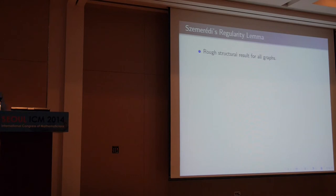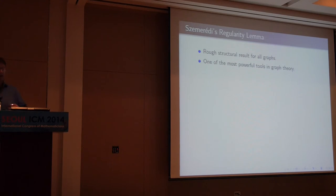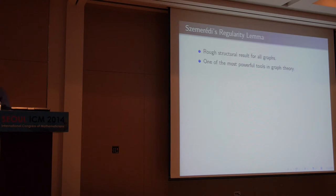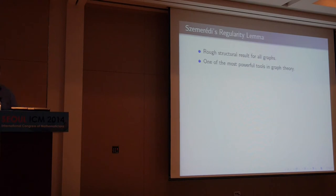Understanding the structure of these graphs can yield critical insights into topics ranging from the spread of disease to the properties of complex crystals. However, it's often quite difficult to analyze the structure of large graphs. These examples each have over a billion vertices, and it remains a big challenge to analyze the structure of large networks. I want to talk about Szemerédi's regularity lemma, which is a rough structural result that holds for all graphs. It's one of the most powerful tools in graph theory, and it's really created a paradigm shift in how we view and study graphs. An early version of the regularity lemma was used by Szemerédi in his proof that any dense subset of the positive integers contains arbitrarily long arithmetic progressions. Szemerédi got the Abel Prize a couple of years ago, in part for this work.